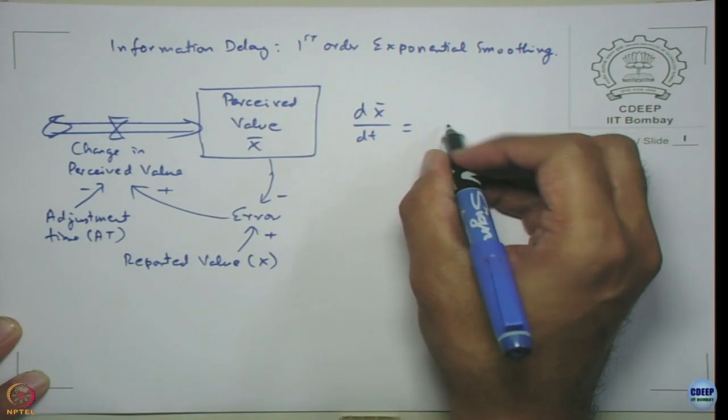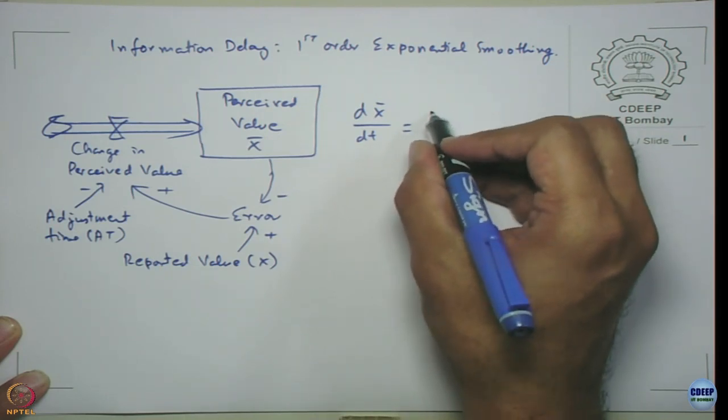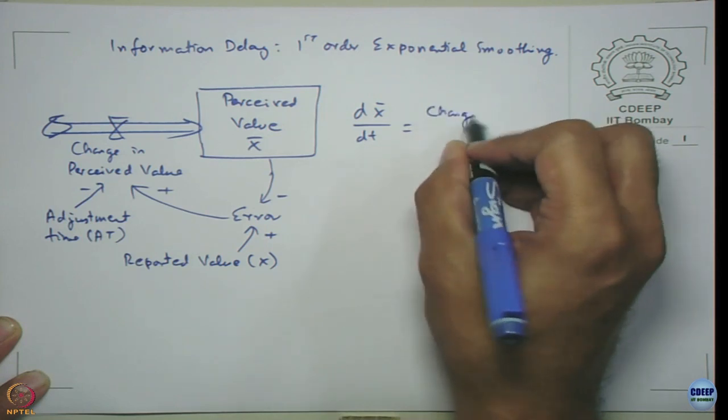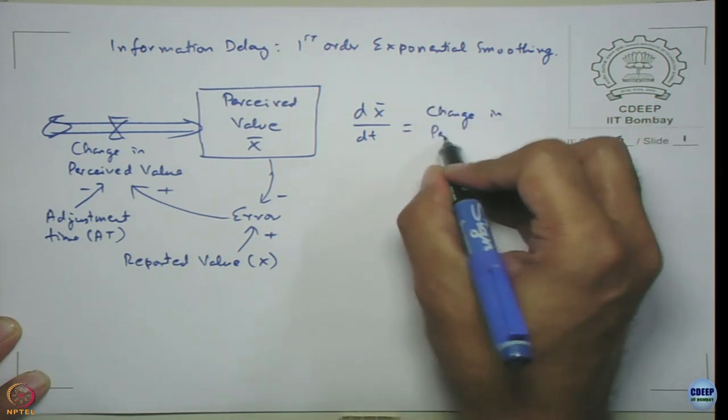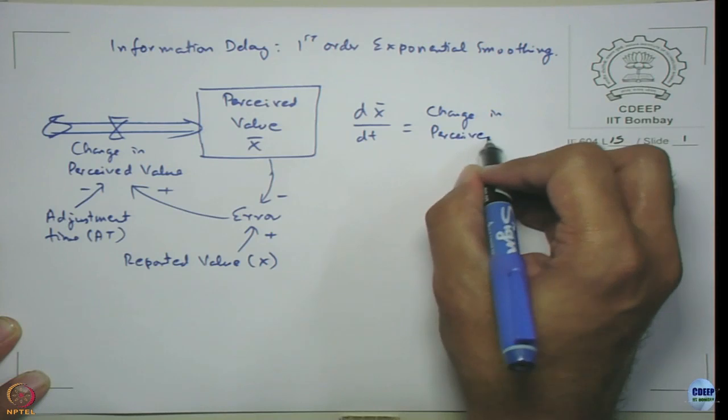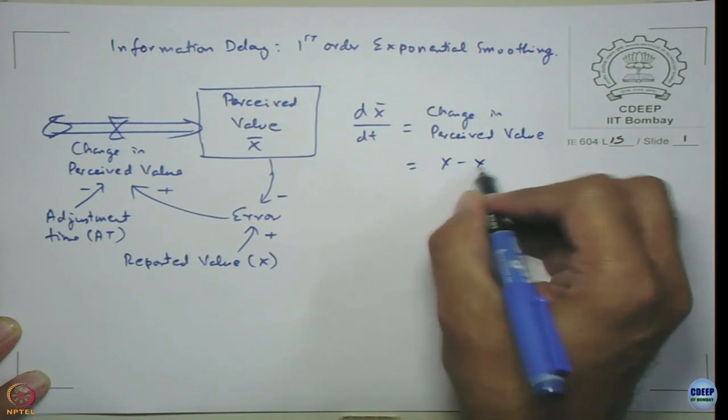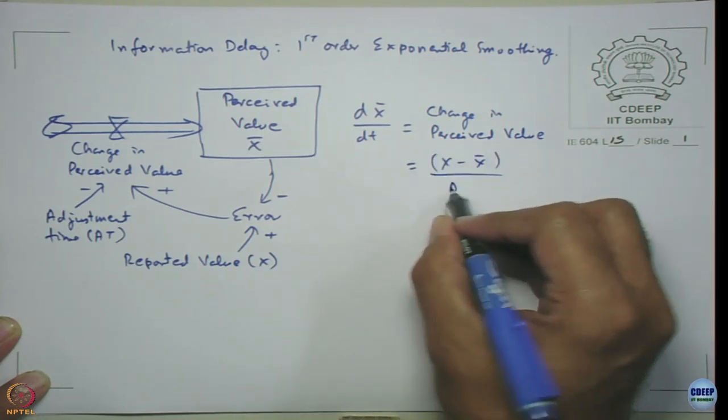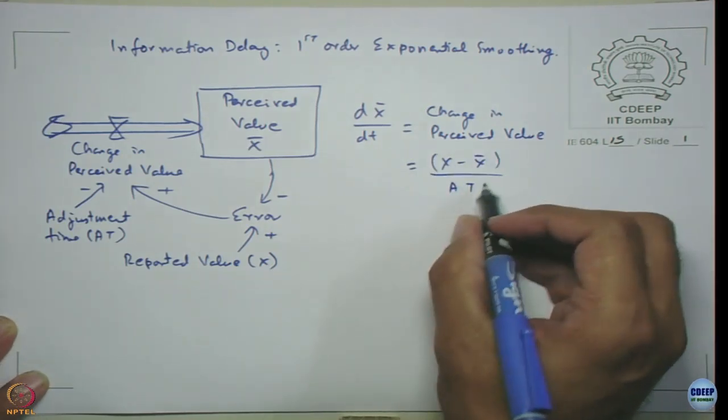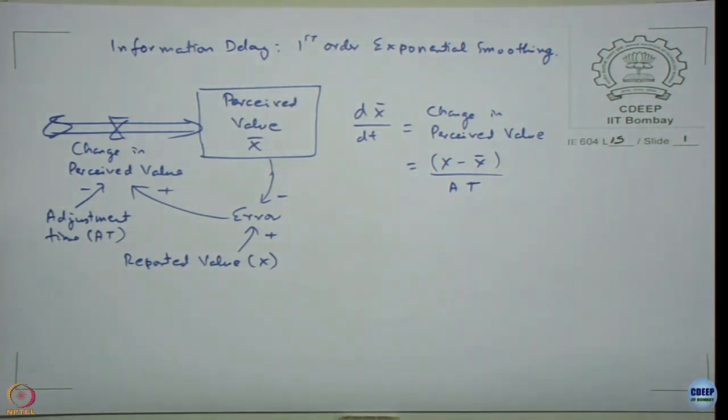This is the change in perceived value, which is nothing but x minus x bar divided by your adjustment time. This is a first order information delay or first order exponential delay, first order adaptive smoothing—these are various terminologies that are used to represent the same thing.